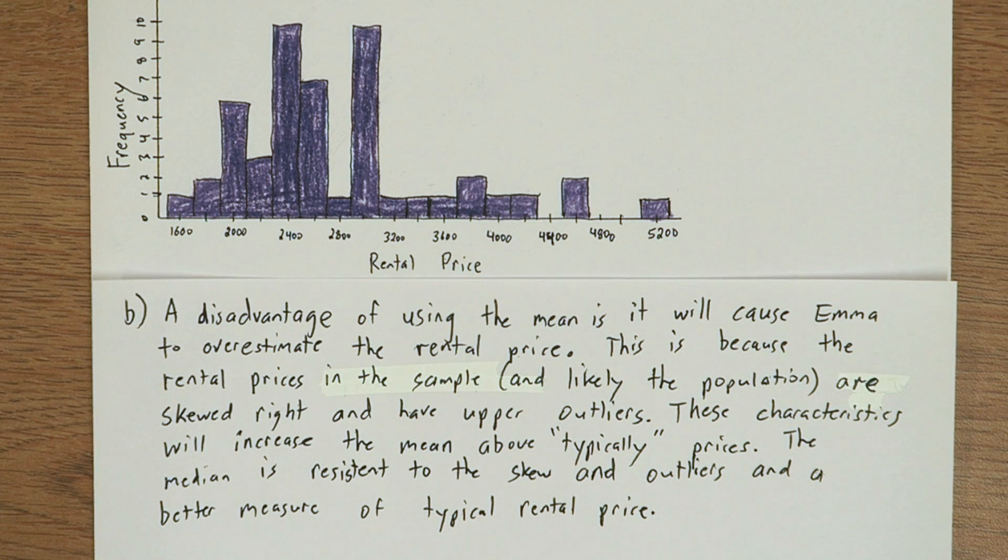A disadvantage of using the mean is that it will cause Emma to overestimate the rental price. This is because the rental prices in the sample and likely the population are skewed right and have upper outliers. These characteristics will increase the mean above typical prices. The median is resistant to the skew and the outliers and a better measure of typical rental price.